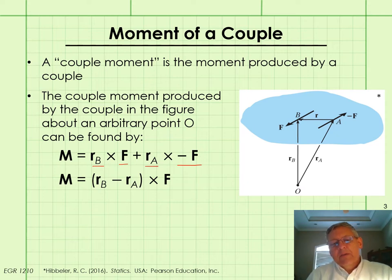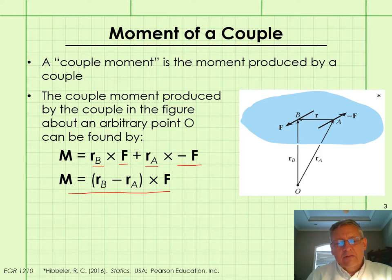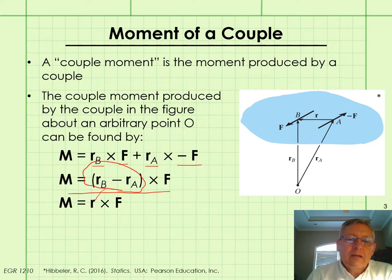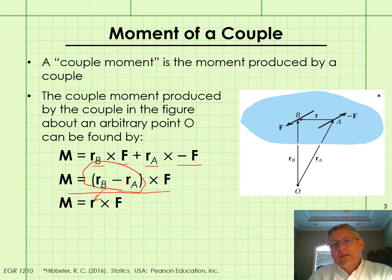Now the distributive property applies to cross products, so we can write this equation. And then remembering back to the second lecture, R sub B minus R sub A is equivalent to R.